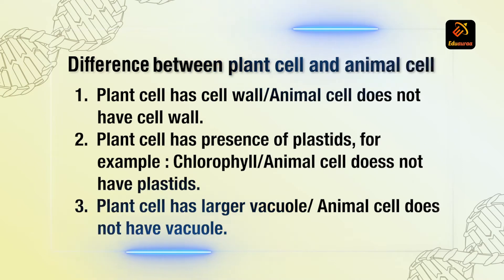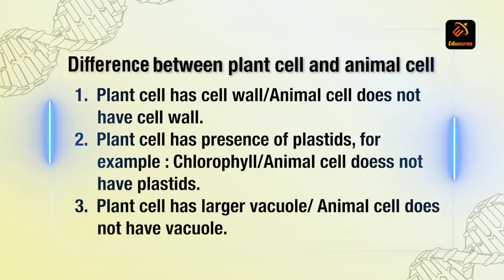Plant cell has larger vacuoles and many of them. Animal cell does not have vacuoles. Even if vacuoles are present, they are smaller in number and smaller in size.